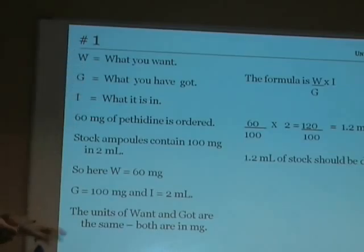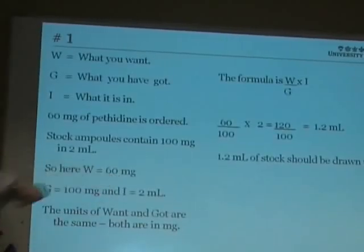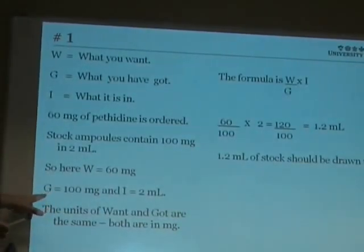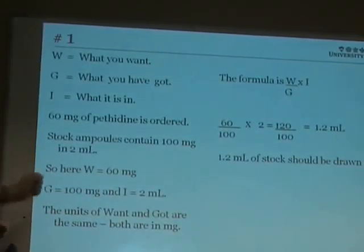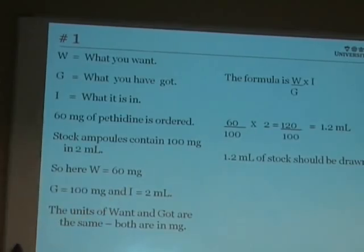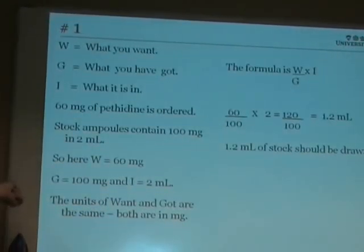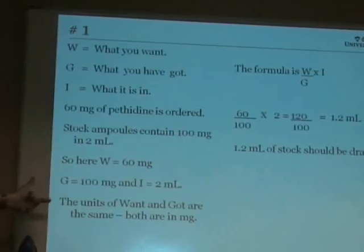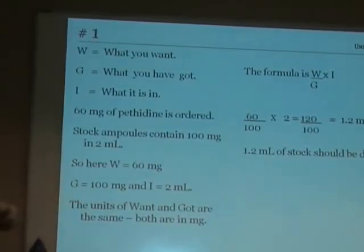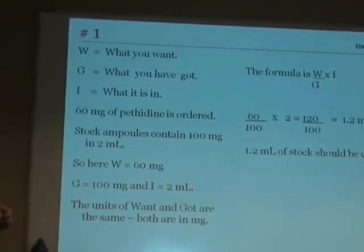So for this calculation here, W is 60mg, G is 100mg and I is 2mL. It's very important when you're doing these calculations that the units of want and got are the same. And in this case, they're both in milligrams.